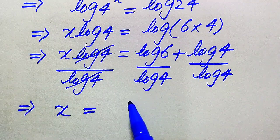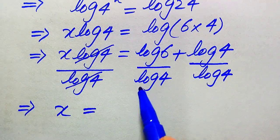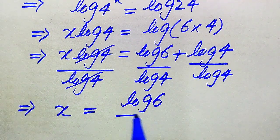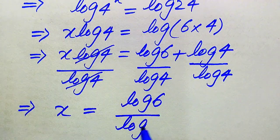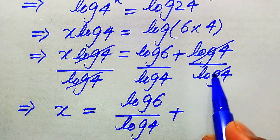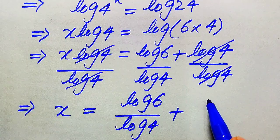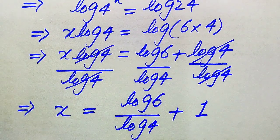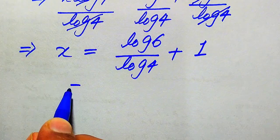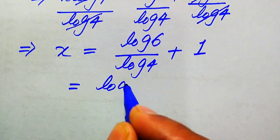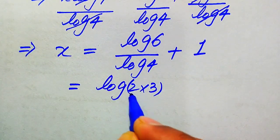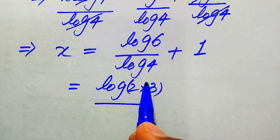We have log 6 divided by log 4, plus — this log 4 also cancels out with log 4 — and here we get only 1. So x equals log 6 over log 4 plus 1.